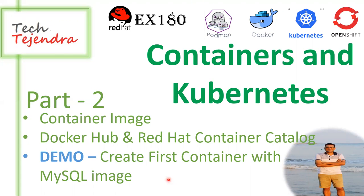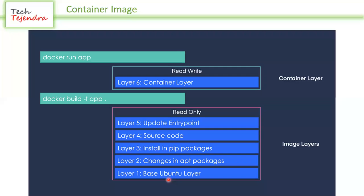Let me move ahead. So what is a container image? A container image has a kind of layered architecture — one layer above another. There is a base image, which is the base layer, then on top of it another layer, then on top of that another layer, and so on.